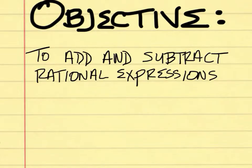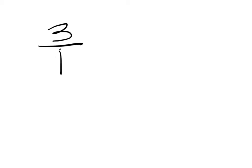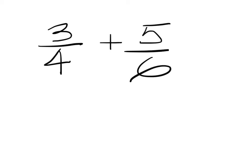Today we will add and subtract rational expressions. Before we do that, you must remember how to add and subtract fractions on a basic level. We'll start with a basic fraction: three over four plus five over six. What must I do first to add these fractions together? What's my first step?